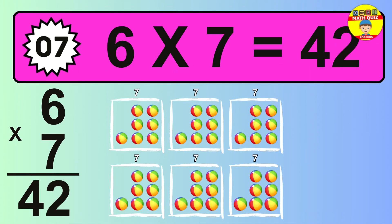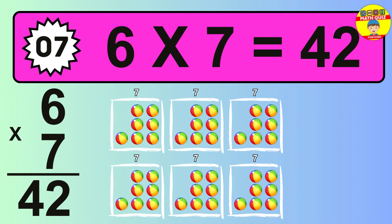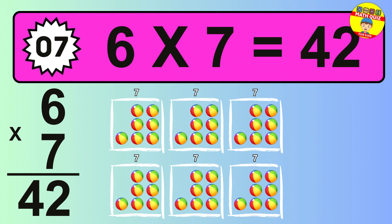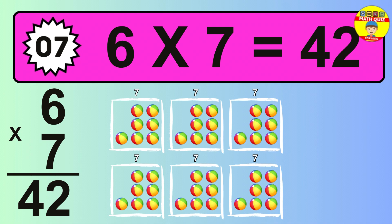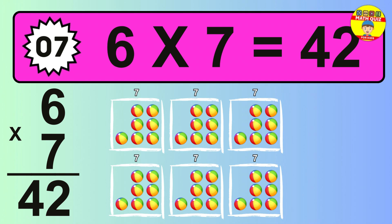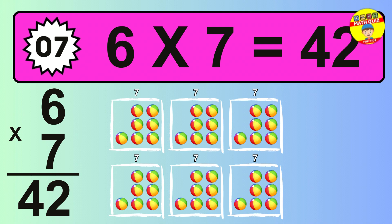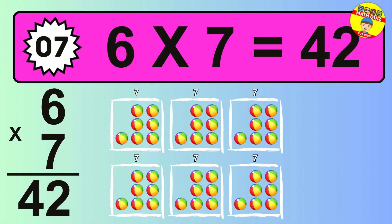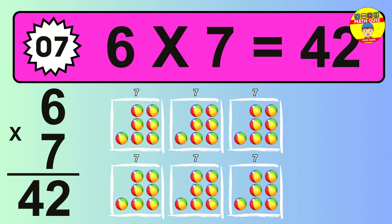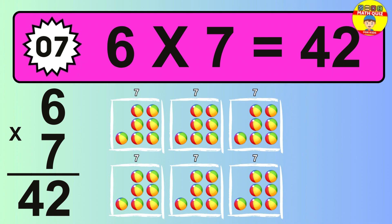The answer is 6 times 7 is 42. To calculate, we have 6 groups with 7 balls each one. So, how many balls do we have? 42 balls.